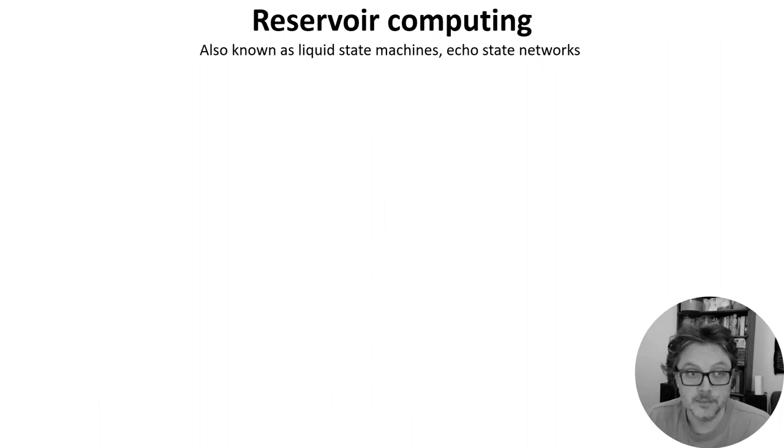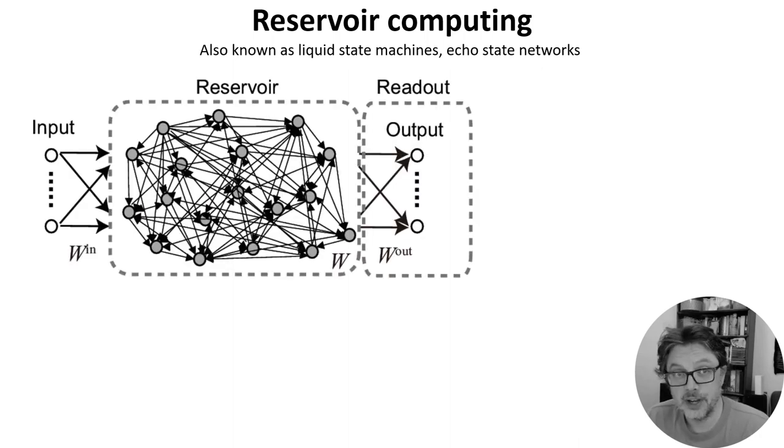Let's start with reservoir computing which is also known as liquid state machines and echo state networks in different contexts. In this setup we start with some time varying input sequence connected to a randomly recurrently connected group of neurons. These random connections are not trained.